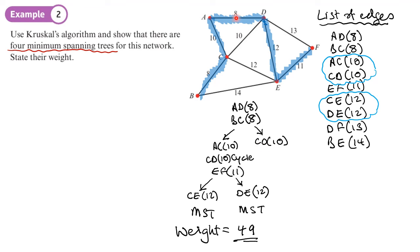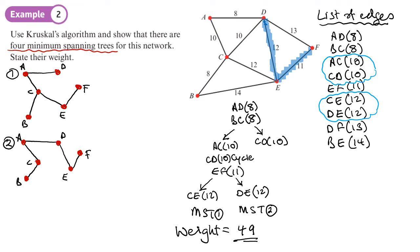Now we'll draw these two spanning trees at the side here, and then we'll have a look at this route if we choose CD instead. So here's my minimum spanning tree number one from this route, and my minimum spanning tree number two from this route. We know that we already have chosen AD and BC. So highlight those AD, BC.